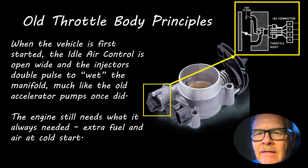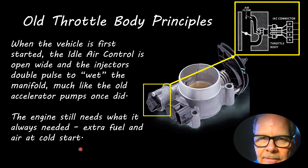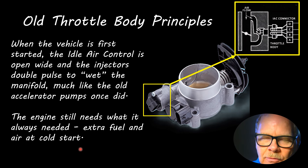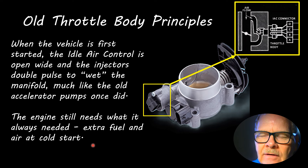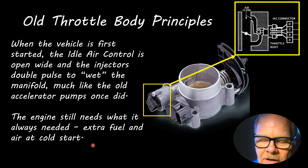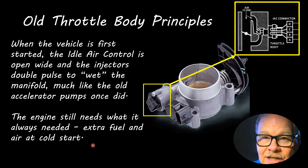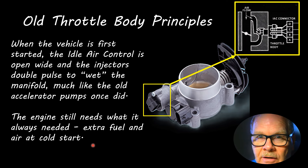On a carburetor you'd tap the gas and it would set the choke and squirt some gas in the manifold. The way I always checked a carburetor on a no-start was to hold the choke open, move the throttle, and see if gas was squirting in there. If you didn't see gas squirting, there wasn't any gas in the carburetor and you already knew something you needed to do first.